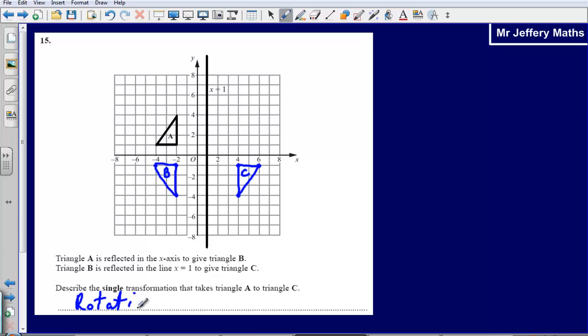So that would get us one mark. For a second mark, we would need to say how far it's been rotated. Well, hopefully as well you can see that it's been rotated 180 degrees. It's been rotated a half turn.